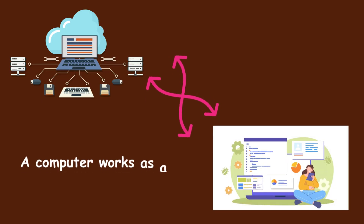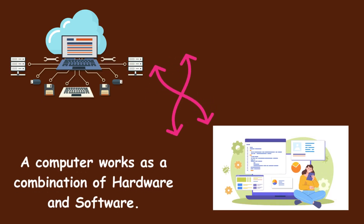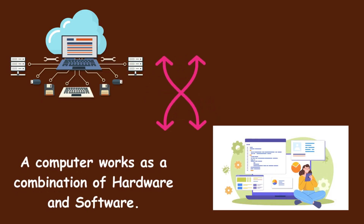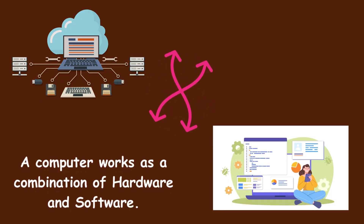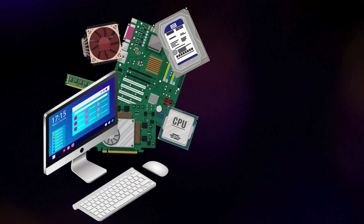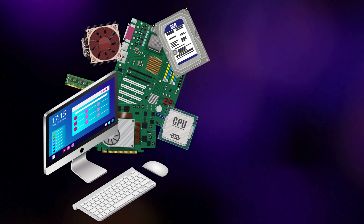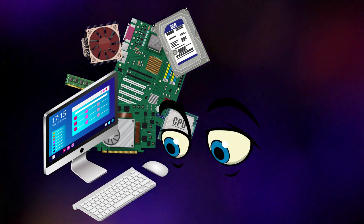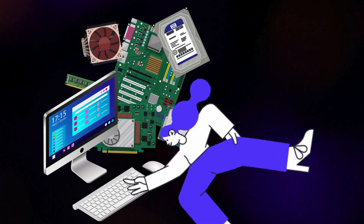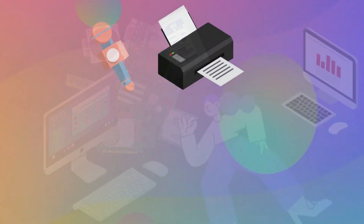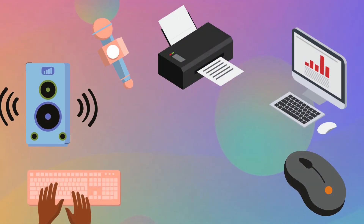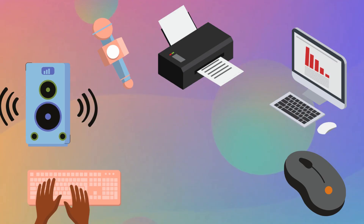A computer works as a combination of hardware and software. Hardware is the parts that we can see and touch, like a keyboard, mouse, monitor, etc.